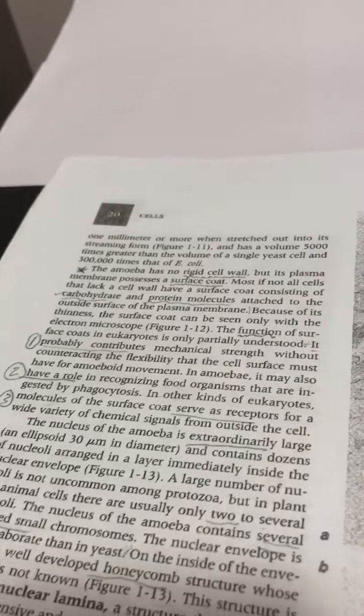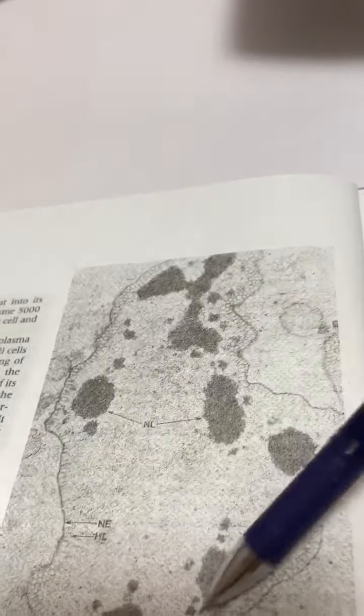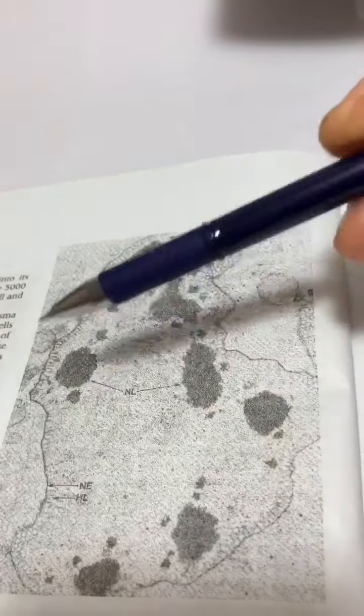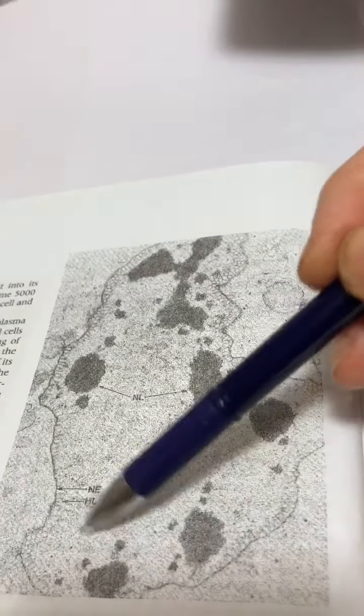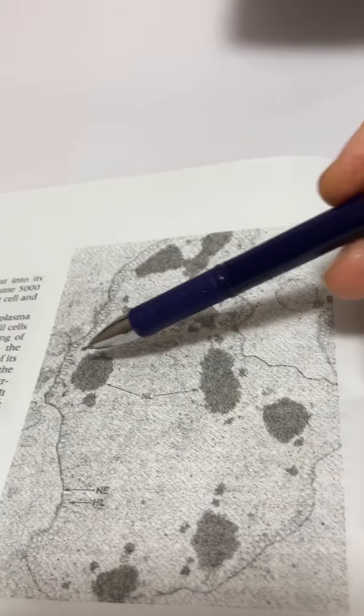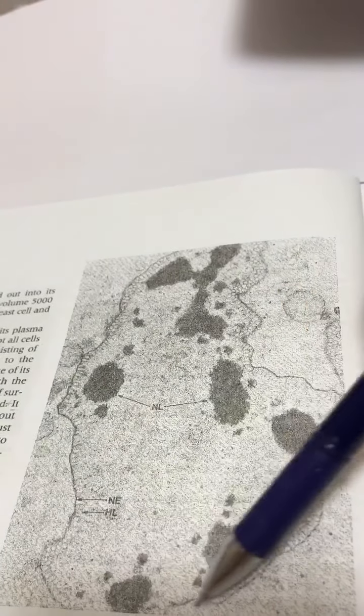Here we found that this is the nucleus of the amoeba and these are the nucleoli which are present in the nucleus, and the nuclear envelope is found here.